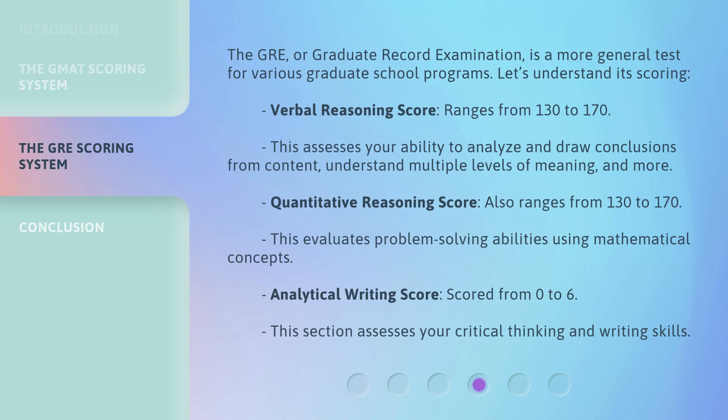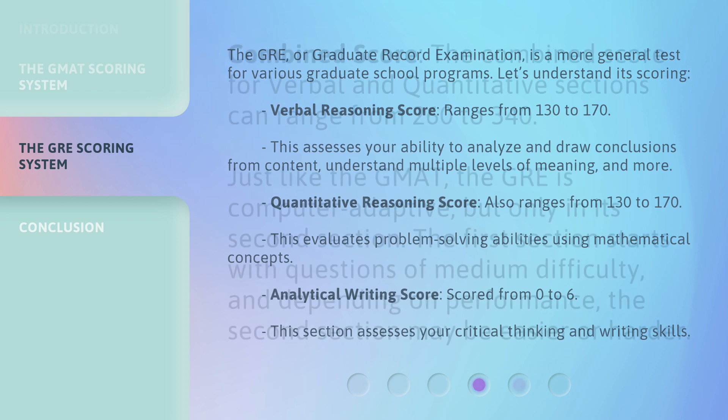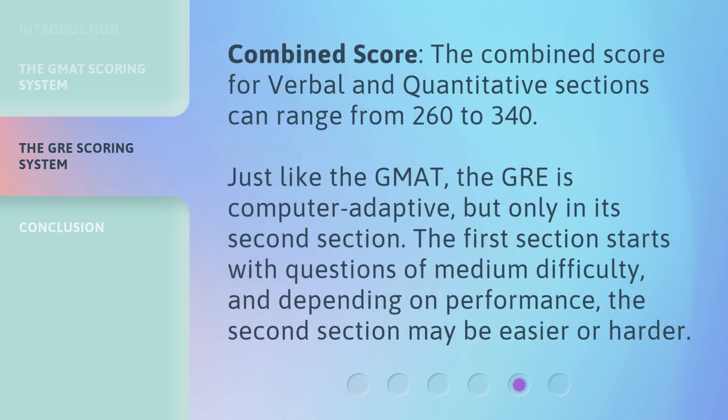Quantitative Reasoning Score also ranges from 130 to 170. This evaluates problem-solving abilities using mathematical concepts. Analytical Writing Score is scored from 0 to 6, and assesses your critical thinking and writing skills. The combined score for verbal and quantitative sections can range from 260 to 340.